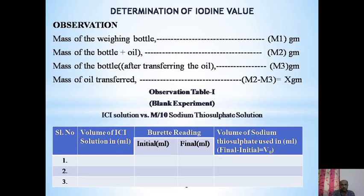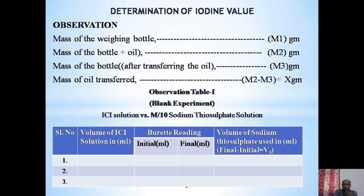We calculate the mass of oil this way. First, take the mass of the empty weighing bottle — that is M1 grams. Then pour the required quantity of oil into the bottle and take the weight of the bottle plus oil, which is M2. The mass of the bottle after transferring the oil is M3.